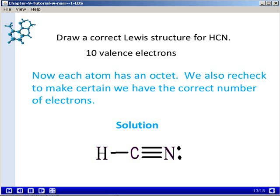A line corresponds to 2 dots, and we have a lone pair on the nitrogen atom, which gives us a total of 10 electrons, which is the correct total.